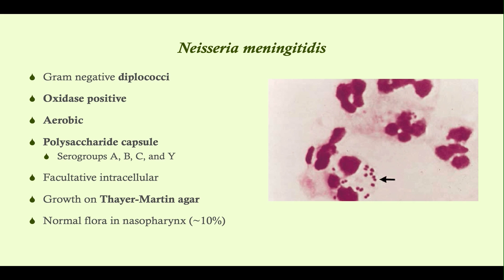There are four serogroups that are common for the capsule — you don't need to be familiar with all the details, but they will come up when we talk about the vaccine. Neisseria meningitidis is part of the normal flora in the nasopharynx in about 10% of people, and it doesn't really cause any problems in that context.